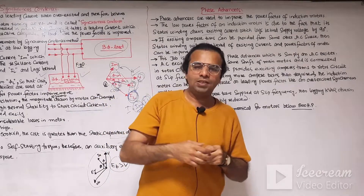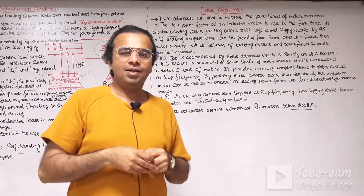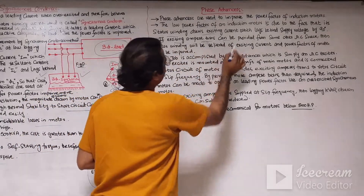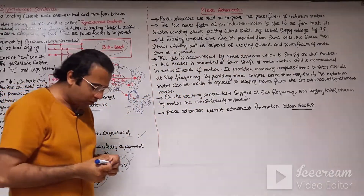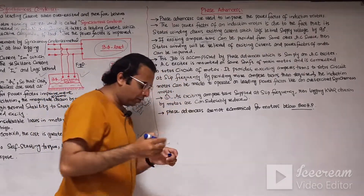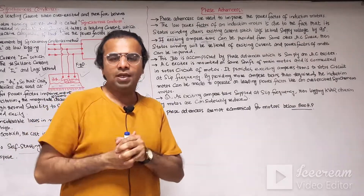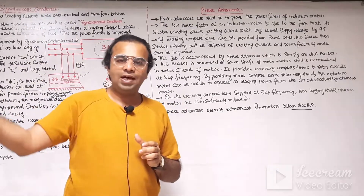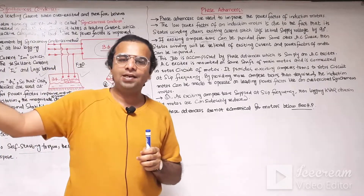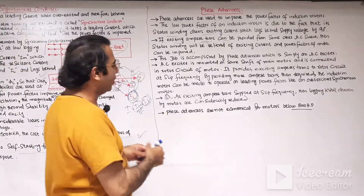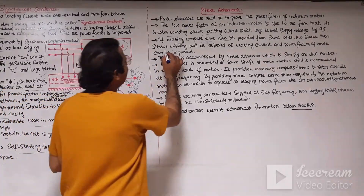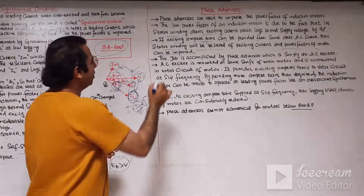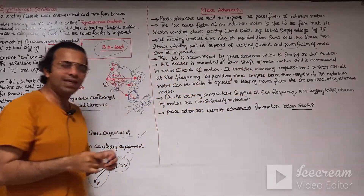The current drawn by the stator coils of the induction motor lags behind the voltage at 90 degrees. If exciting ampere-turns can be provided from another external exciter source — in the case of a wound rotor induction motor — if the slip rings of the three-phase wound rotor induction motor are connected to an external AC exciter and more exciting ampere-turns are supplied, the stator winding will be relieved of the exciting current and the power factor of the motor can be improved. This job is accomplished by the phase advancer, which is simply an AC exciter.